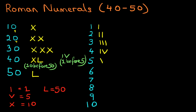5 is V. 6 is VI, 7 is VII, 8 is VIII. 9 is 1 before 10, so we write down IX. And lastly, we have 10, which is simply an X. So those are the numbers we've done before from 1 to 10.